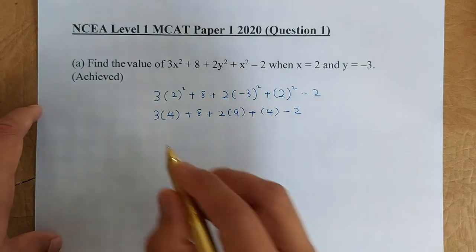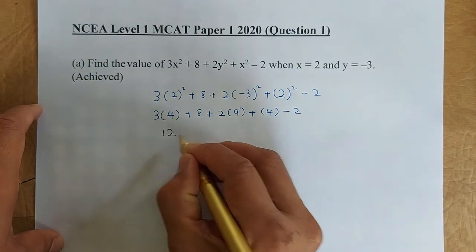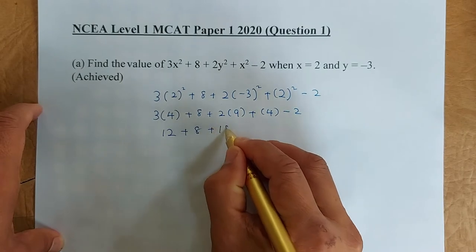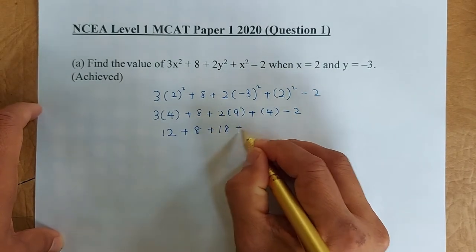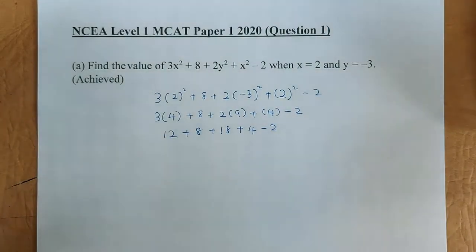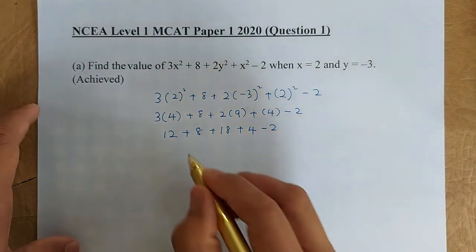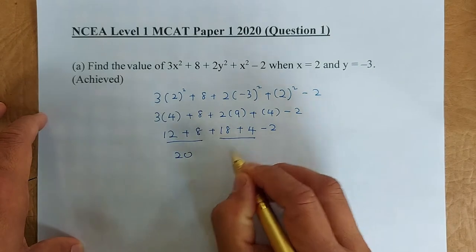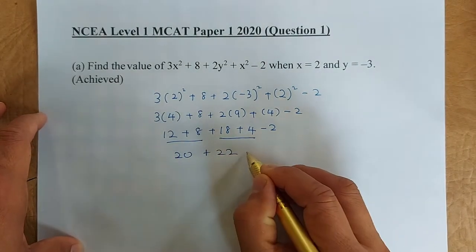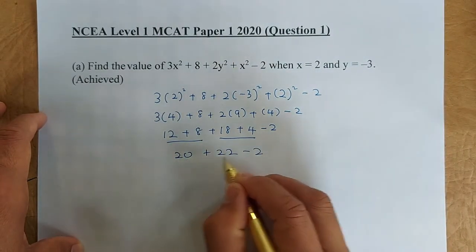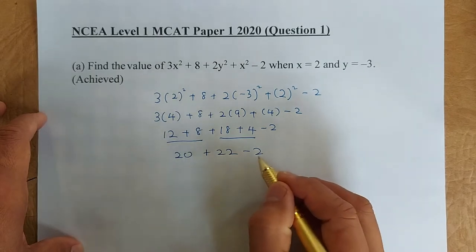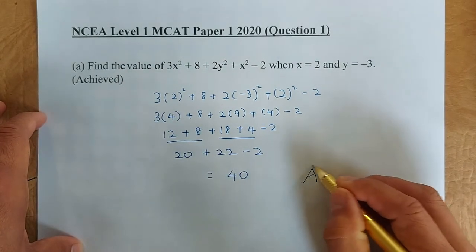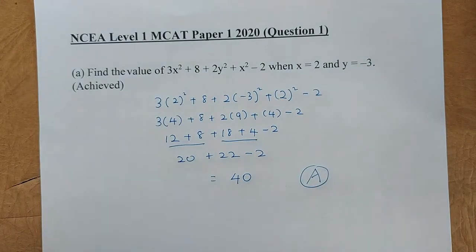Now we simplify: 3 times 4 is 12, plus 8, then 2 times 9 is 18, plus 4, then minus 2. So 12 plus 8 is 20, 18 plus 4 is 22, and then minus 2. So 20 plus 22 is 42, minus 2, and the answer is 40. And that is an achieved for the first question.